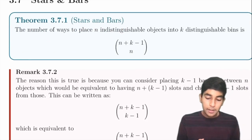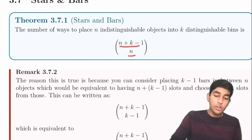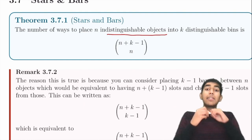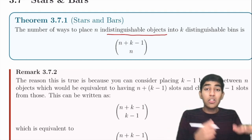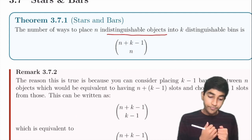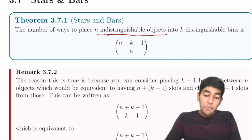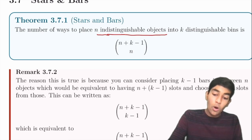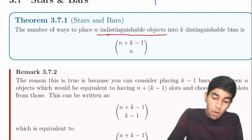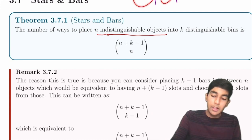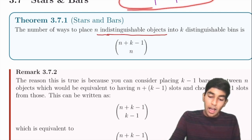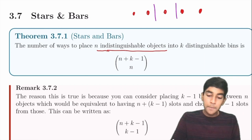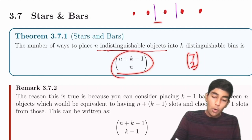Stars and bars: the number of ways to place n indistinguishable objects into k bins is C(n + k − 1, n). For example, distributing 5 identical candies among 3 kids: we place 2 bars among 7 symbols, giving C(7, 2). This only works when objects are indistinguishable; if objects differ, use inclusion-exclusion.